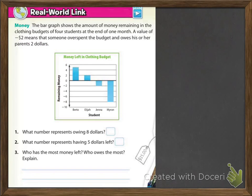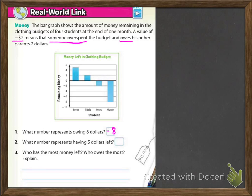Under Real World Link, it says money. The bar graph shows the amount of money remaining in the clothing budget of four students at the end of one month. A value of negative 2 means that someone overspent — go ahead and underline the negative 2 — and it means that someone overspent the budget and owes his or her parents $2. On the graph you can see positive 5 for Berto, Elijah has positive 2, Jenna owes her mom $2, and Myron owes mom and dad $8. It says, what number represents owing $8? That would be negative 8, so you want to put negative 8 there.